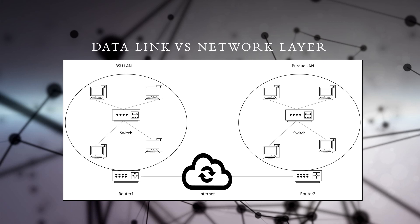This picture shows two LANs at Ball State University and Purdue University. Nodes within the BSU LAN can communicate using Ethernet, which is a Layer 2 protocol, and internal devices such as hub or switch. However, inter-network communication is done with the IP protocol and a router, which is a Layer 3 device.